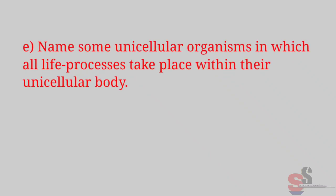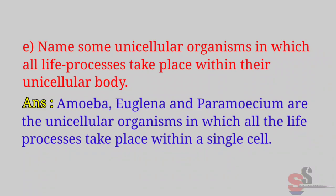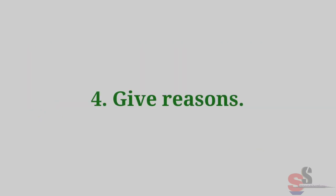E. Name some unicellular organisms in which all life processes take place within their unicellular body. Answer: Amoeba, Euglena, and Paramecium are unicellular organisms in which all life processes take place within a single cell.